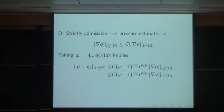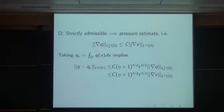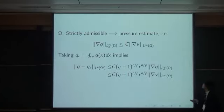We take the constant Q_c as the mean value of pressure in the localized domain. Applying Poincaré inequality to pressure gives the first estimate. Then using strict admissibility, we estimate the sup-norm of ∇Q by the sup-norm of ∇V. Once we have this pressure estimate and establish the error estimate, it is straightforward to complete the proof.